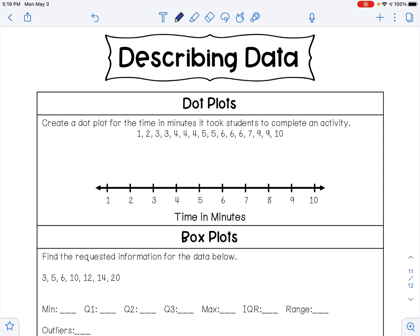Hello everybody, today we're going to review describing data, so it's all about statistics. It says create a dot plot for the time in minutes it took students to complete an activity. So we're going to have one dot at one, one data point at two, two at three, three at four, two at five, three at six, one at seven.